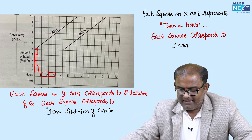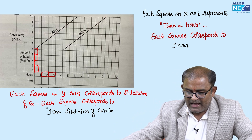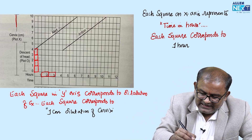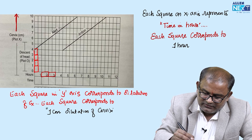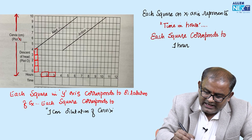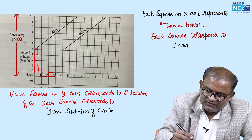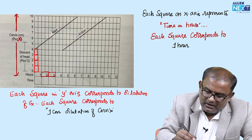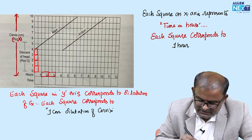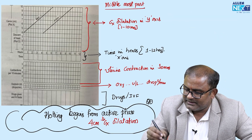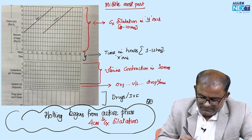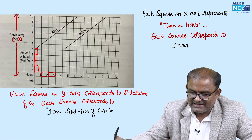Now, looking into this — this is the cervix dilatation, marked as X (also noted as S), that is in centimeters from 0 to 10 centimeters. So, cervix dilatation is marked as X, ranging from 0 to 10 centimeters.